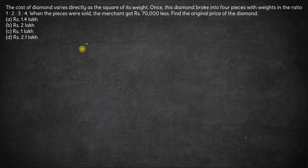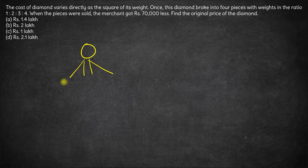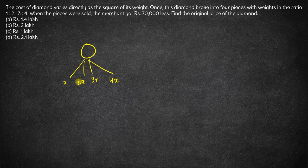There was a diamond that broke into four pieces. The weights are in the ratio of 1:2:3:4. So let's say the weight of these parts is x, 2x, 3x, and 4x. That means the weight of the original stone would be the sum of all these weights: 4 plus 3 is 7, plus 2 is 9, plus 1 is 10x.